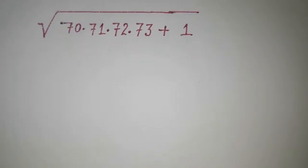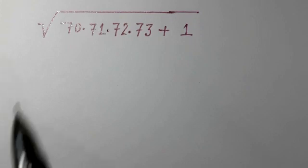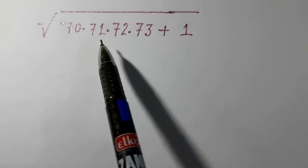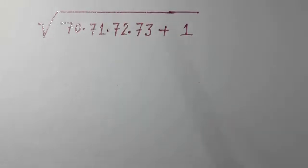Hi everyone, today we have this question: √(70 × 71 × 72 × 73 + 1). How to solve it without using a calculator?